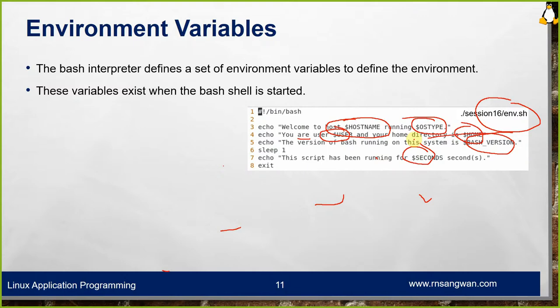If you want to fetch more environment variables, you can use the env command. Here is your first question: use or modify the env.sh script and add at least 10 more environment variables with appropriate messages. Use the env command with piping to identify any 10 other variables and display their values with appropriate messages in the same script.